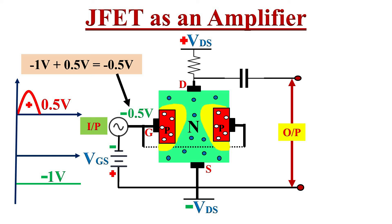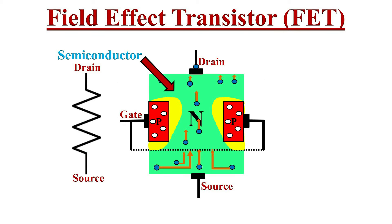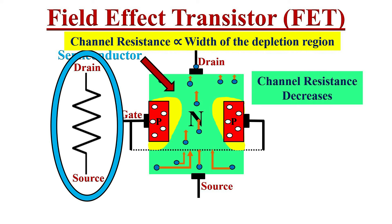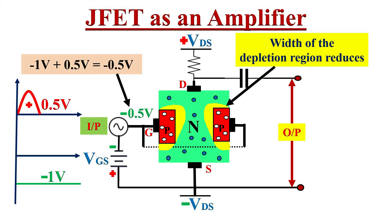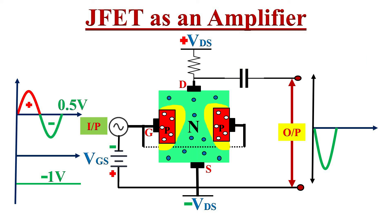During the positive half cycle of the input signal, the reverse bias on the gate decreases — VGS changes from minus 1 volt to minus 0.5 volts. Due to this, the width of the depletion region decreases and the channel width increases, hence the current flow in the channel increases. The drain current increases. Remember that the drain-to-source channel resistance is directly proportional to the width of the depletion region. Due to the reduction in depletion region, channel resistance is very low, hence the entire negative voltage of VDS appears at the drain terminal, resulting in a negative-going signal at the output through the capacitor.